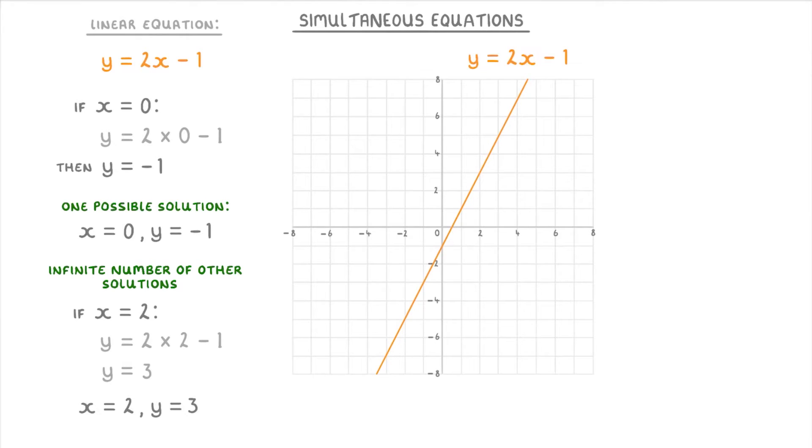Basically every point along this line is a possible solution. For example, here's our first solution of x equals 0 and y equals minus 1, and here's our second solution of x equals 2, y equals 3. The same goes if we pick another equation like y plus 2x equals 5.